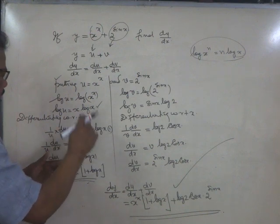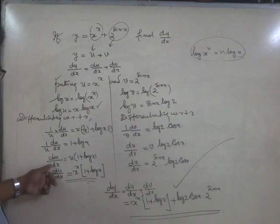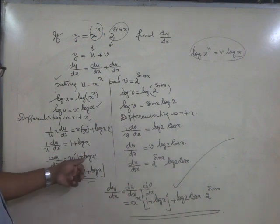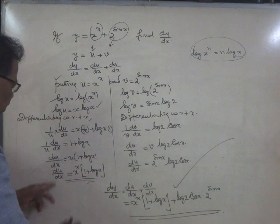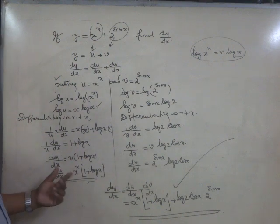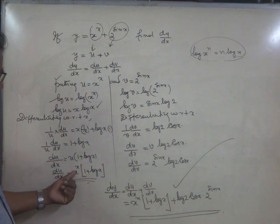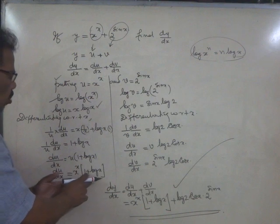Right side: u into 1 plus log x. So du by dx equals u into 1 plus log x. Replacing u with x raise to x, du by dx reduces to x raise to x into 1 plus log x.